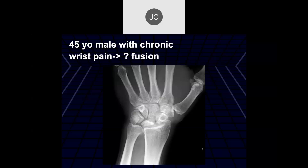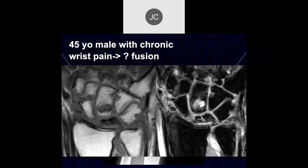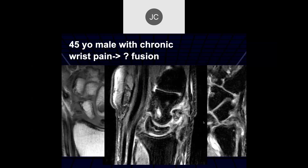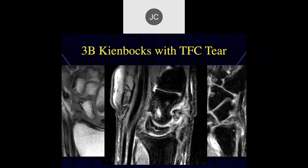A 45-year-old male with chronic wrist pain, question of fusion. There's a sclerotic, shrunken appearance to the lunate with collapse and comminuted fracturing. On MR, it's very sclerotic with a fracture and decreased height. On sagittal images, there's a linear fracture and collapse of the lunate with some elongation — this would be stage 3B Kienbock's.